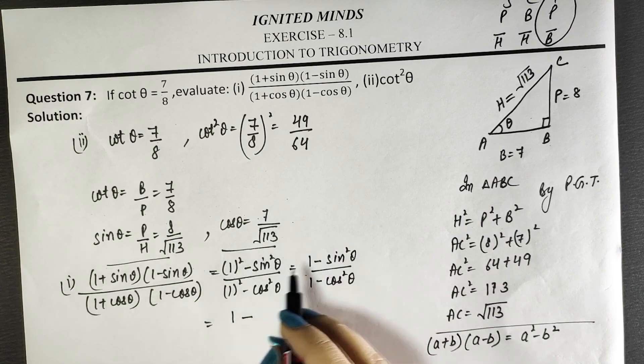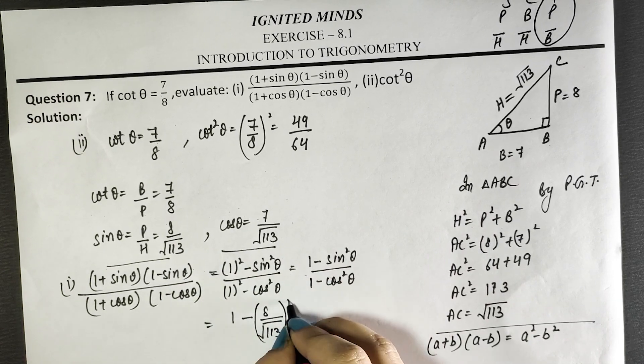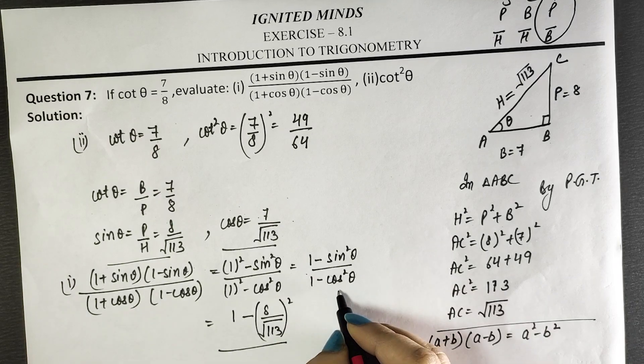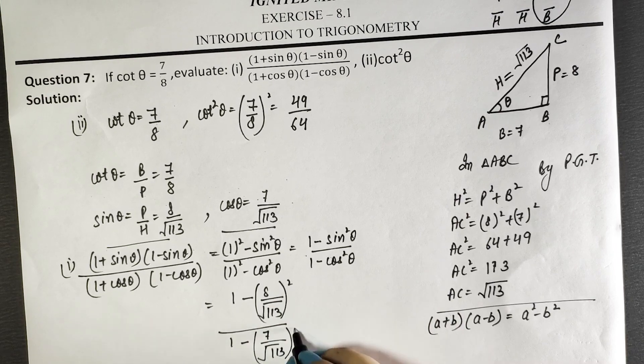What is sin θ? The value is 8 by root 113 whole squared. Similarly, cos value: 1 minus 7 by root 113 whole squared.